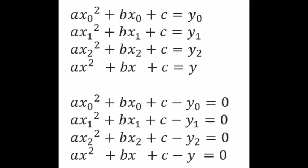We saw in the last lesson that a third order Lagrange polynomial can be represented as four equations and four unknowns.